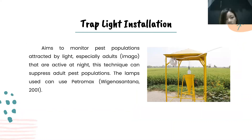The next physical treatment is trap light installation. This aims to monitor pest populations attracted by light, especially adult imago that are active at night. This technique can suppress adult pest populations.